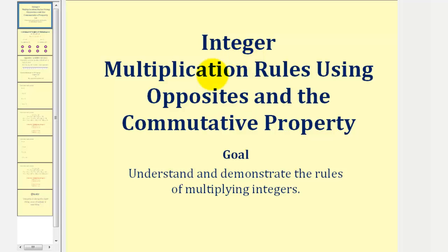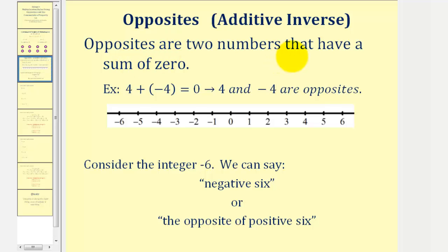Welcome to a lesson in which we'll discover the rules for multiplying integers by using opposites and the commutative property. Let's start by reviewing the definition of opposites and the commutative property of multiplication. Opposites are two numbers that have a sum of zero. Since four plus negative four equals zero, four and negative four are opposites.